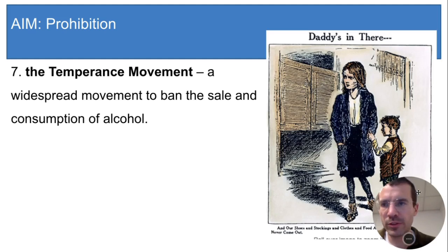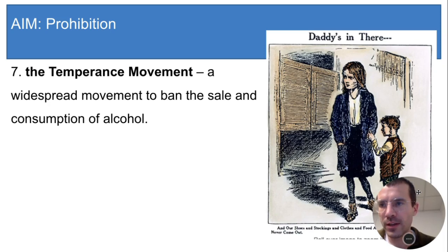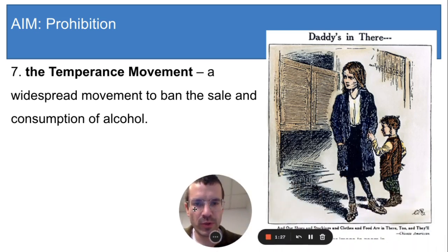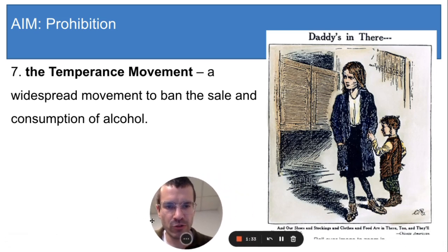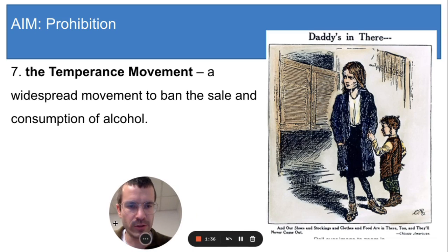Women led the temperance movement for different reasons, but maybe the most important one was that women suffered some of the worst consequences of alcohol abuse. In the 1800s in America, getting drunk in bars was a very male activity because most bars didn't serve women, and often the men who drank heavily neglected their families or beat them while drunk. This cartoon sums up the problem — the mom says 'Daddy's in there, and our shoes and our stockings and clothes and food are in there too, and they'll never come out.'